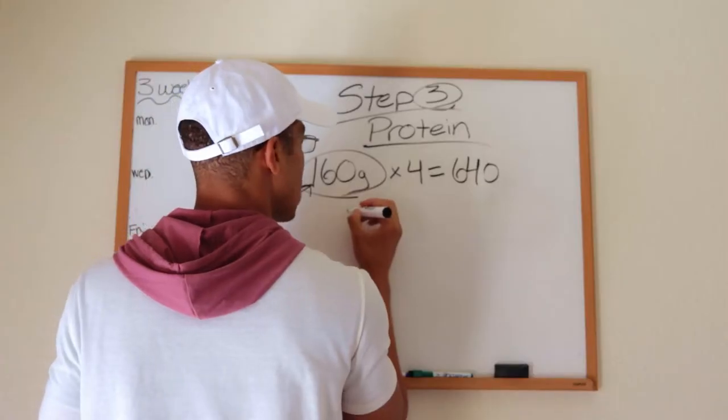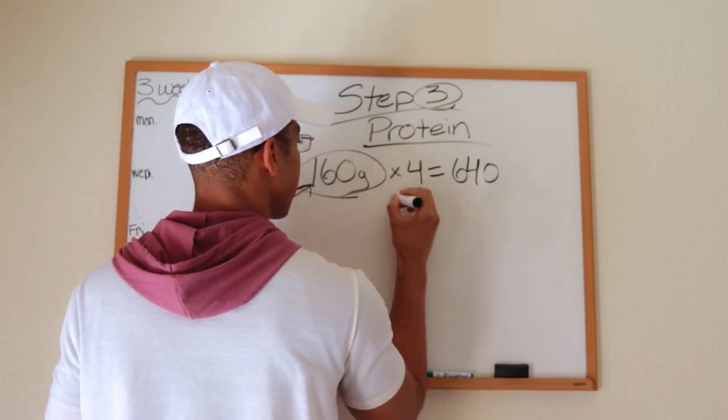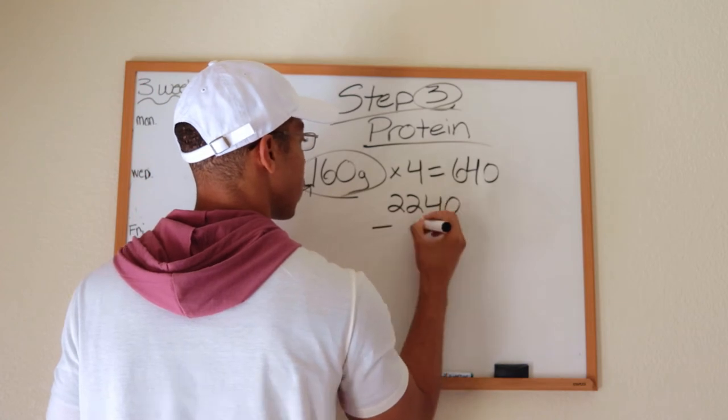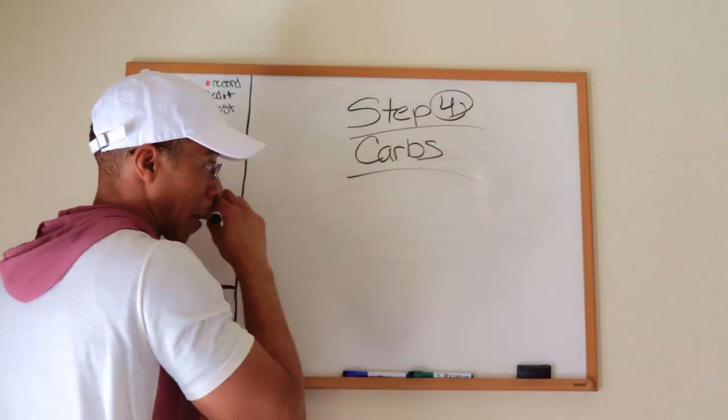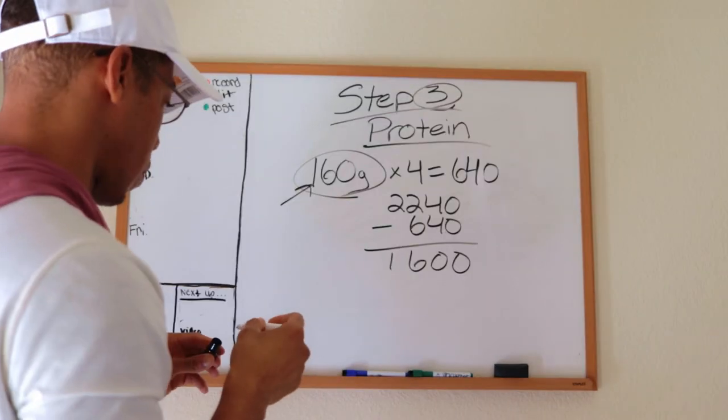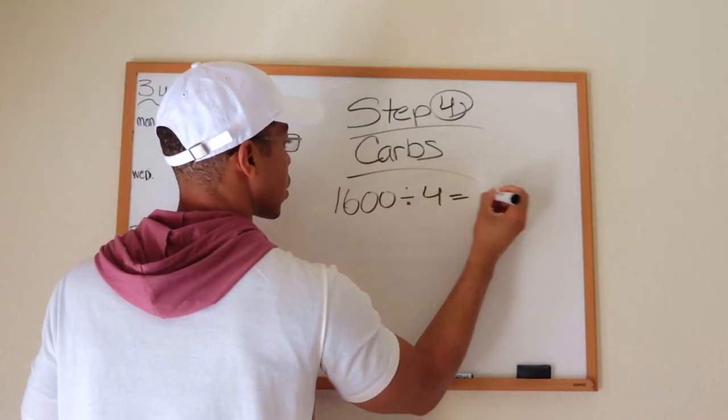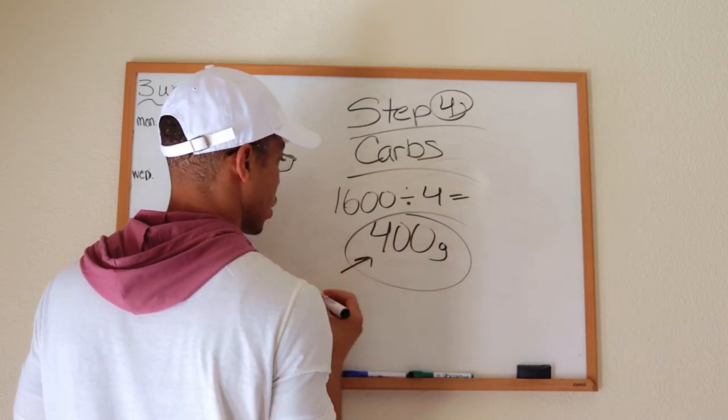To recap step three: take your remaining calorie number from step two — mine was 2,240 — and subtract the number you get when you multiply your grams of protein by four. Mine was 640, subtracted from 2,240. That brings us to step number four: figuring out your carbs. Take the remaining number after subtracting protein calories from your fat-subtracted total. My number was 1,600. Divide that by four, and I got 400 grams of carbs per day.